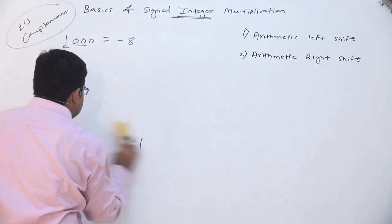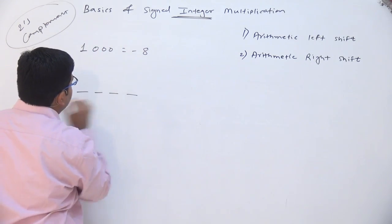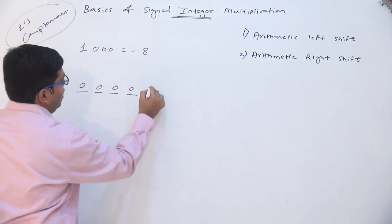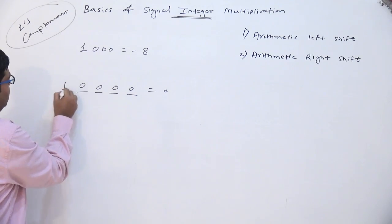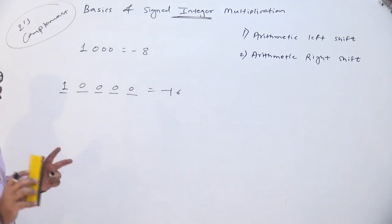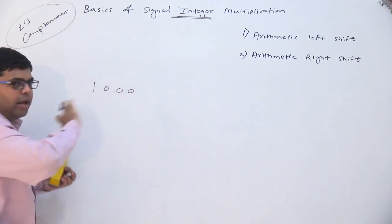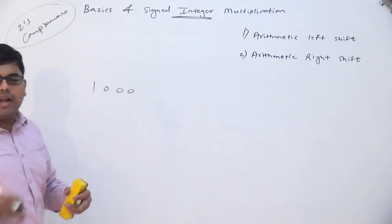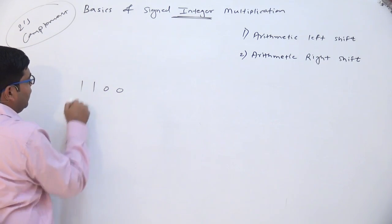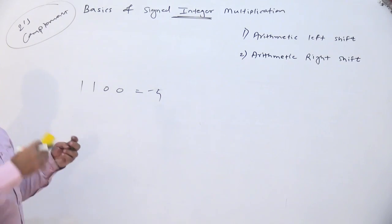While doing right shifting, suppose you have 1 0 0 0 which equals minus 8. If you do left shifting by one place, it becomes 0 0 0 0 and the value comes out equal to 0. However, if you maintain the 1 instead of truncating, the value would be minus 16. For right shifting of 1 0 0 0: take out 1 bit from the right, convert to 4 bits, and copy the original sign bit. The original sign bit was 1, so extend it and the value becomes minus 4. Copying the sign bit is very important in case of right shifting; that is not needed in case of left shifting.